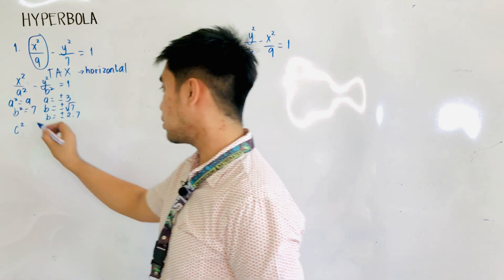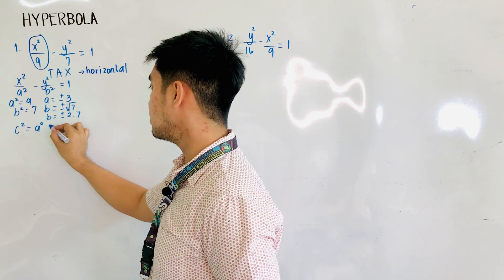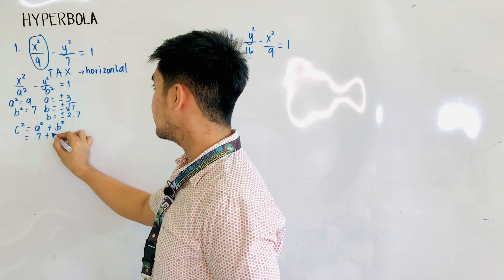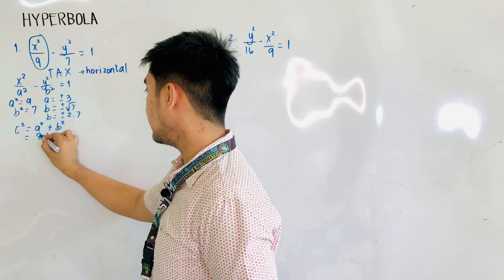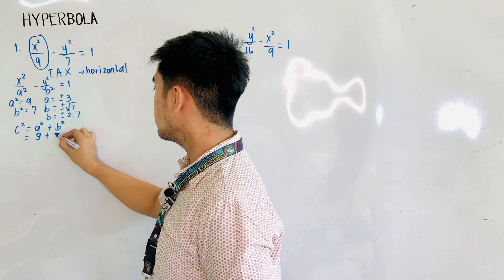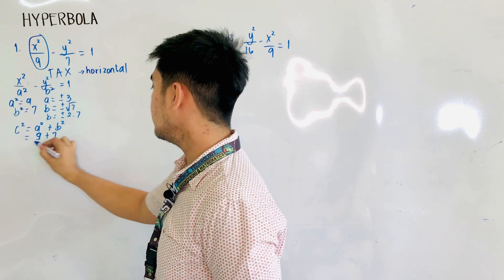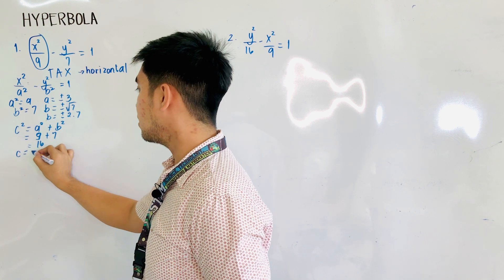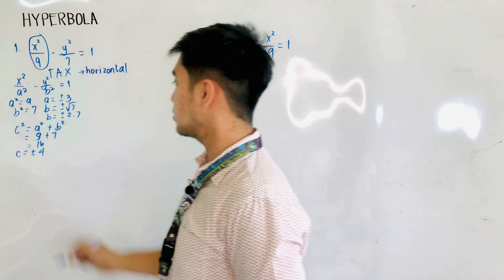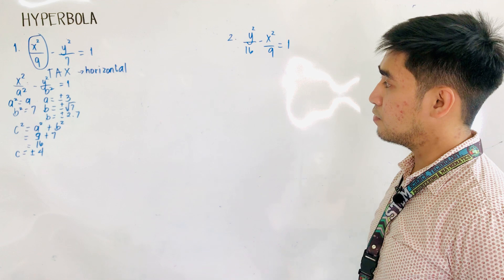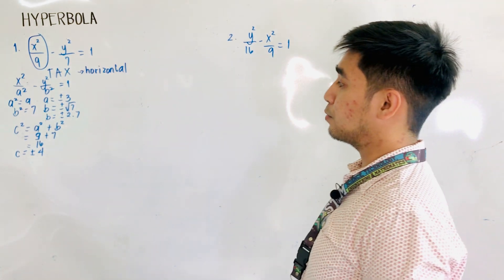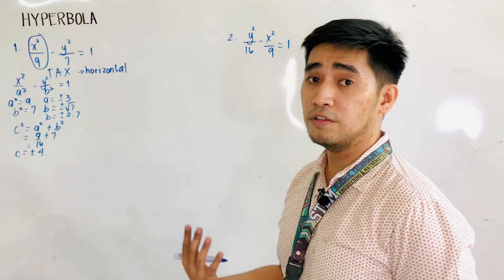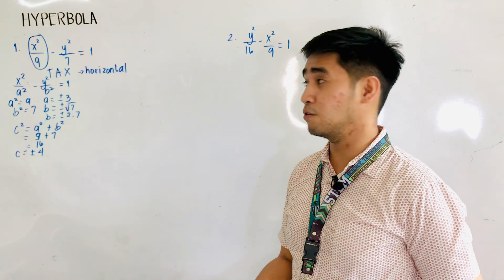c squared is equal to the sum of a squared and b squared. a squared is equal to 9 and b squared is equal to 7. Therefore, 9 plus 7 is equal to 16, and c is equal to plus or minus 4. Having the values of a squared, b squared, and c squared, we are now ready to determine the coordinates of the foci, vertices, and co-vertices.